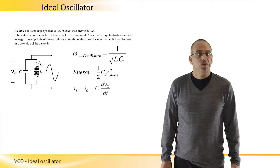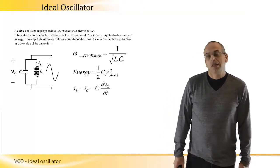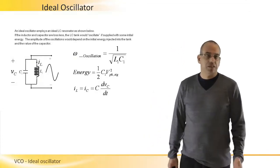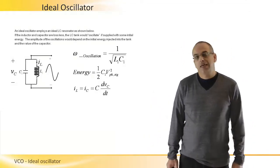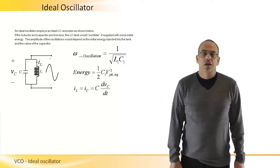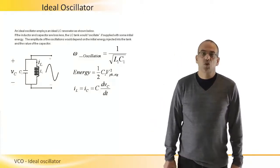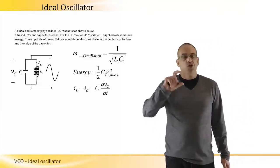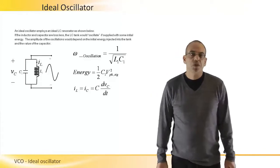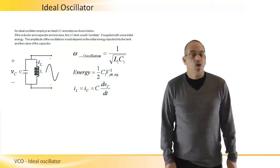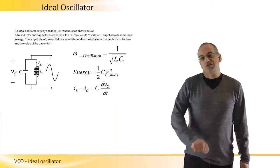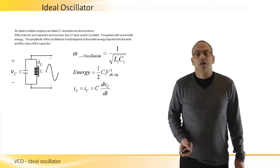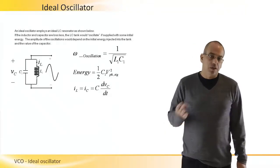Let's talk about ideal oscillator. An ideal oscillator will have an LC tank or a lossless LC tank, an ideal LC tank that would oscillate if supplied with some initial energy. So if we charge the capacitor, for example, this circuit will oscillate because the capacitor will discharge through the inductor and vice versa.